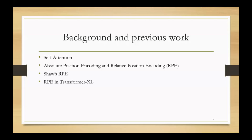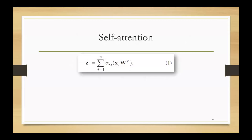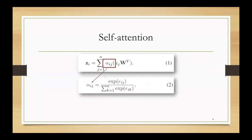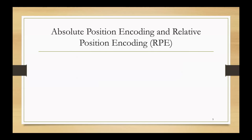For background and previous work, we focus on self-attention, absolute position encoding, and relative position encoding — including Shaw's RPE, Transformer-XL, Relation RPE, SASA, and Axial DeepLab. As a recap: the output z_i of self-attention is computed as the weighted sum of input elements. The coefficient alpha_ij is computed using the softmax of e_ij, which is the dot product attention of key, query, and value matrices. d is the dimensionality of the vectors. Self-attention is computed in parallel using multi-head self-attention.